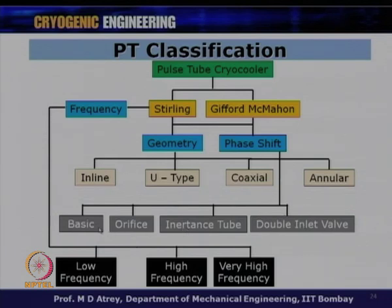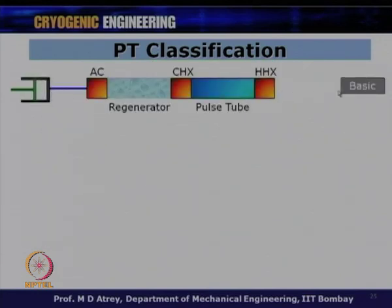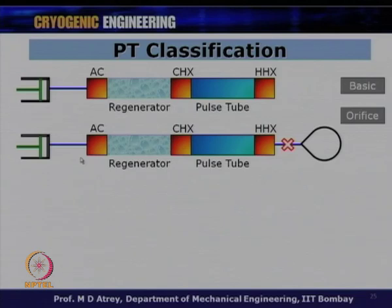These four phase shift mechanisms can be combined with different geometries (U-type, inline) and operating modes (Stirling, GM). In this lecture we focus on phasor diagrams for three types — basic, orifice, and double inlet — while the inertance tube will be explained in the next lecture using an RLC circuit analogy (resistance, inductance, capacitance). Let us now draw the phasor diagram for a basic pulse tube cooler (BPTC).